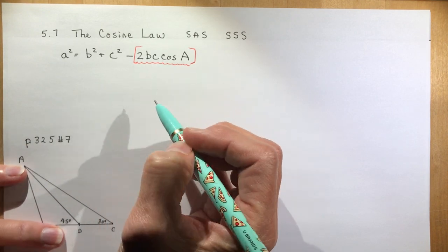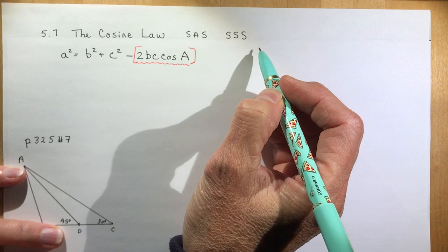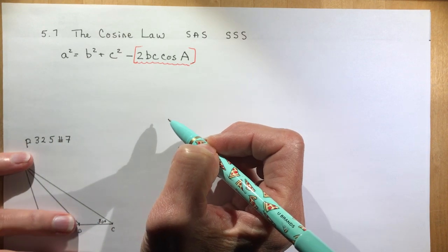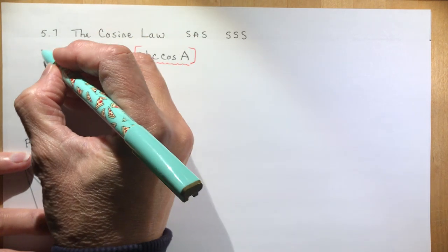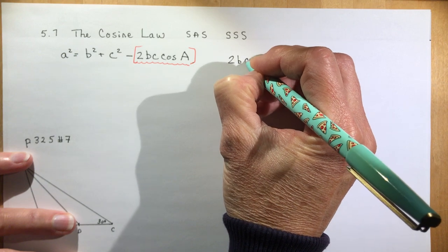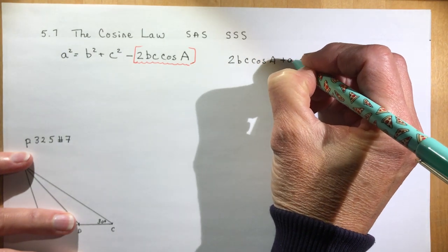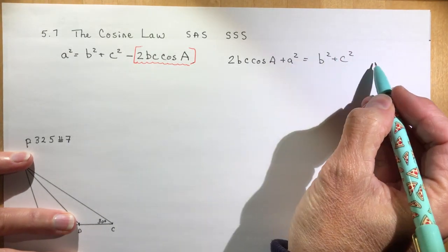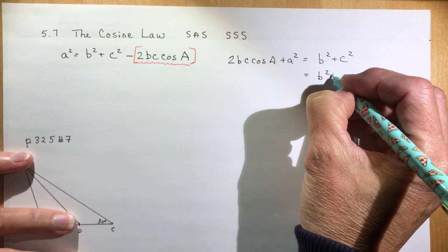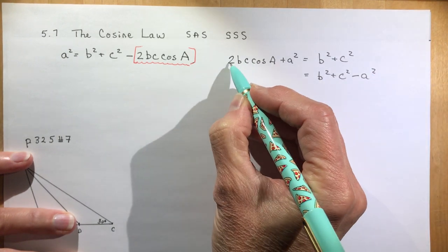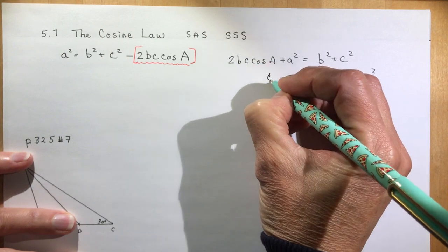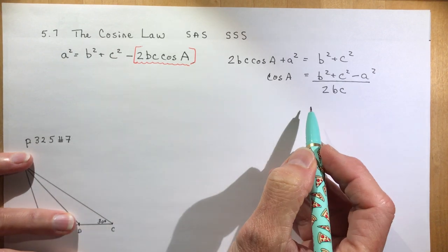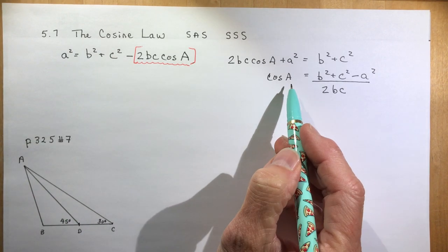Now the other thing you could be asked when you have side, side, side and need to find an angle is to rearrange the equation so that you're solving for cos A. The easiest way to do that is to bring minus 2BC cos A to the other side so that you have 2BC cos A plus A squared equals B squared plus C squared for your first step. Then bring the A squared over and subtract it: B squared plus C squared minus A squared. Finally, divide by 2BC, leaving you with cos A. So cos A equals that quantity divided by 2BC. Those are the two formulas you need to find either an angle or a side length.